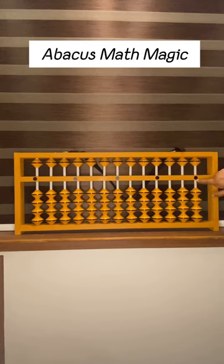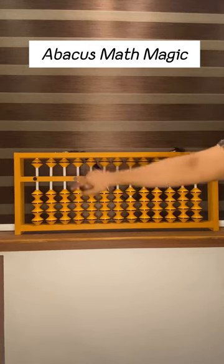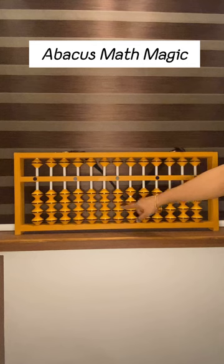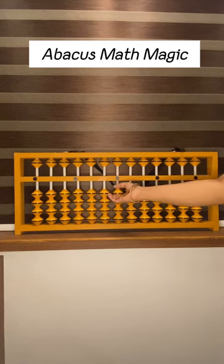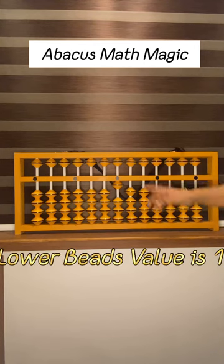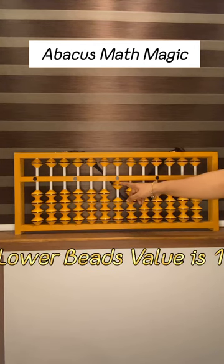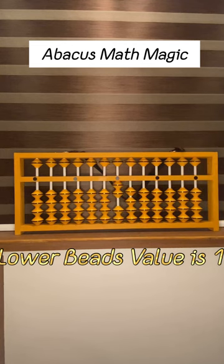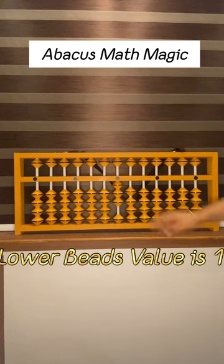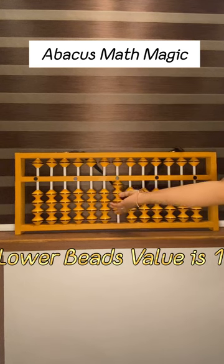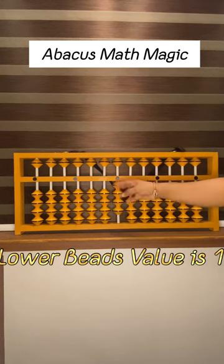Now see here, five dots are here. The middle one is called the one splice. This one splice means if one bead touches the bar, the value is 1. Now two beads touch the bar, the value is 2. Three means 3. Four together, its value is 4.